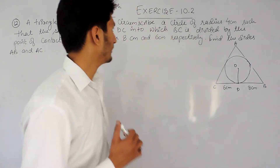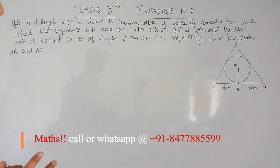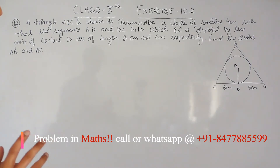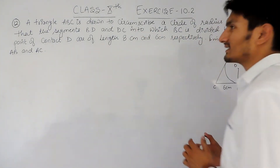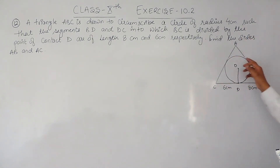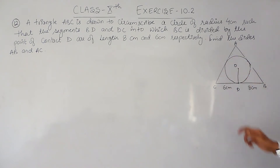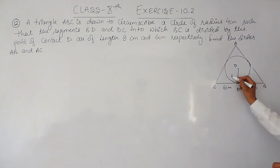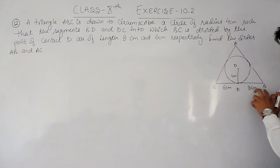In this video we are going to solve question number 12 of exercise 10.2. The question says: triangle ABC is drawn to circumscribe a circle of radius 4 cm such that the segments BD and DC, into which BC is divided by the point of contact D, are of length 8 cm and 6 cm respectively. We have to find the sides AB and AC. This circle is inscribed in the triangle and touches all three sides, with point D dividing BC into 8 cm and 6 cm segments.